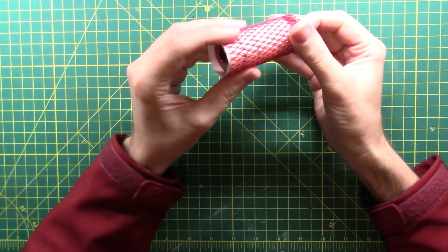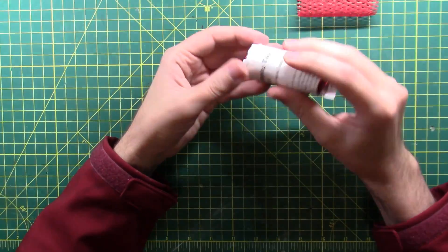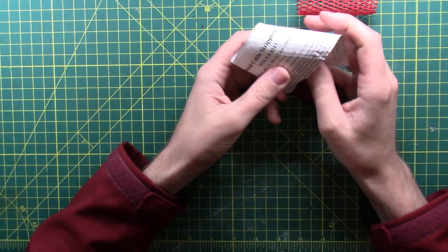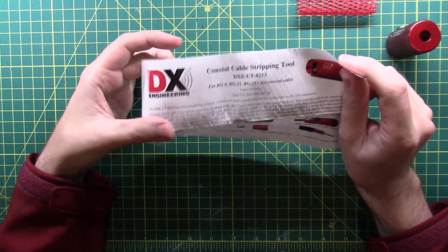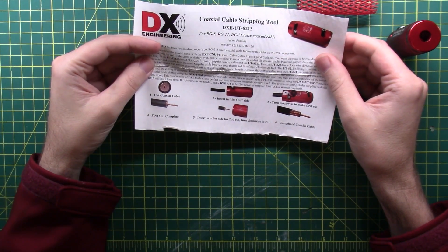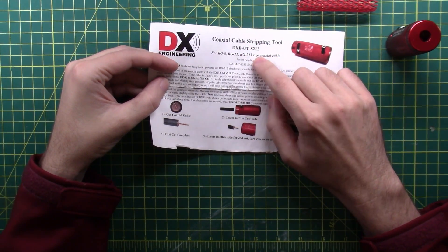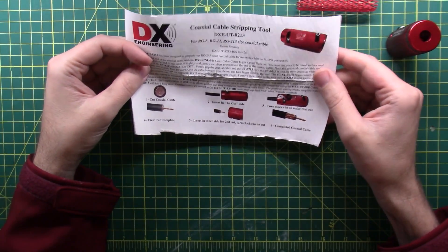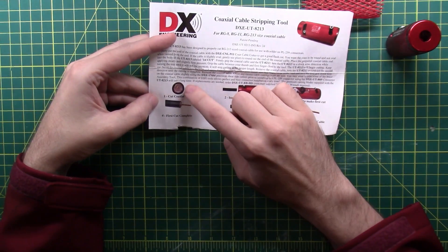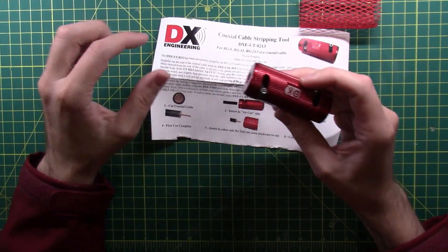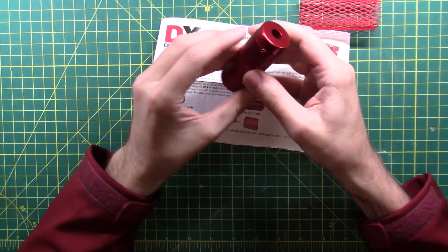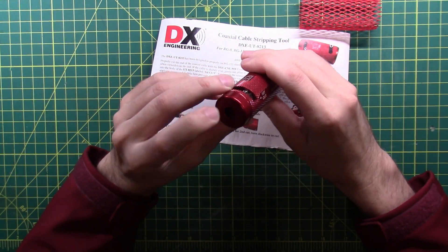All right, so I have this very expensive tool from DX Engineering. And it comes with instructions. The Coaxial Cable Stripping Tool DXEUT8213. There will be a link in the description down below for this one. So cut the coax flat, insert it into the first cut side, which is labeled on the tool right there. It says first cut, so you stick it in there.